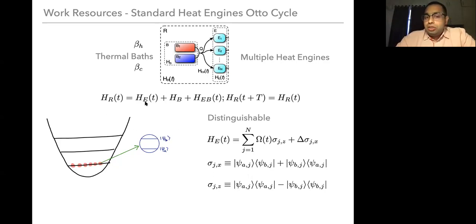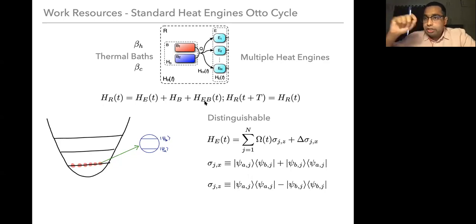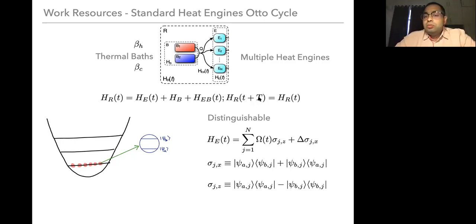Coming to the Hamiltonian of the resource, there are the following parts: one is the engine Hamiltonian H_E that's a function of time, describing whatever engine cycle I take. H_EV(t) is the coupling between the engine and the baths, turned on and off during the engine cycles. H_V, the bath, is always constant. I'm taking the cycle period to be capital T.